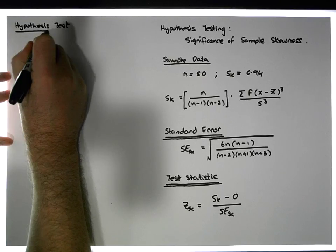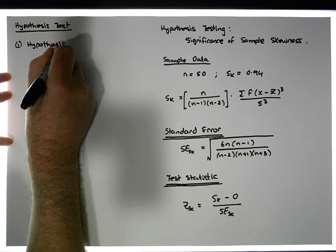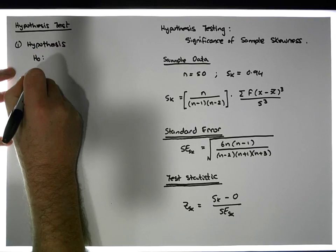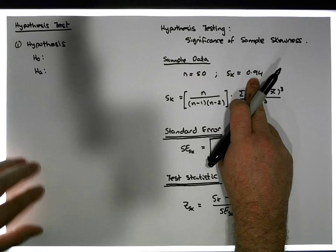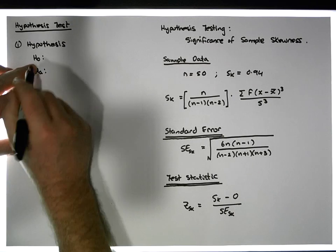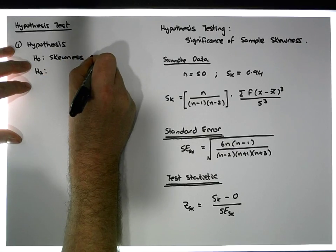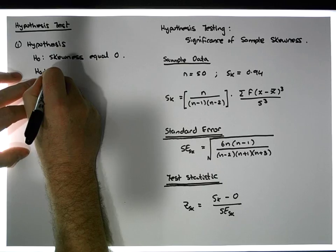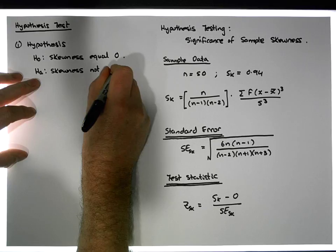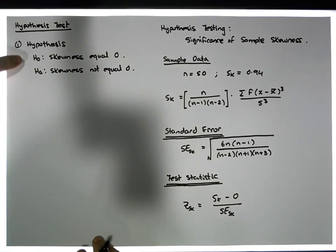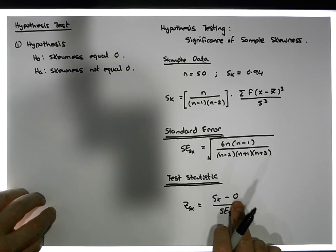Step one is to define the hypothesis. The null position H₀ is that the skewness equals zero. The alternative position Hₐ is that the skewness is not equal to zero. We only reject H₀ in favor of Hₐ if we have deviated far enough from where we believe the distribution is positioned.